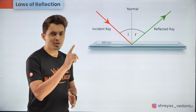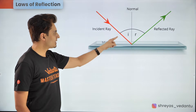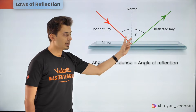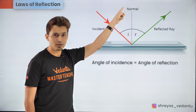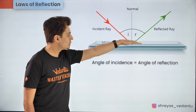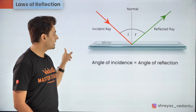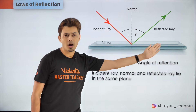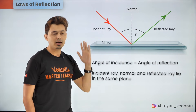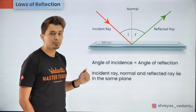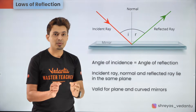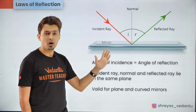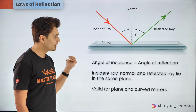Next, let's talk about reflection. The first law says that the incident ray and the reflected ray both make the same angles with the normal drawn to the reflecting surface. Not just that, the incident ray, the normal, as well as the reflected ray, all are in the same plane. Remember, these laws are not just valid for plane mirrors but also for any kind of curved or spherical mirrors.